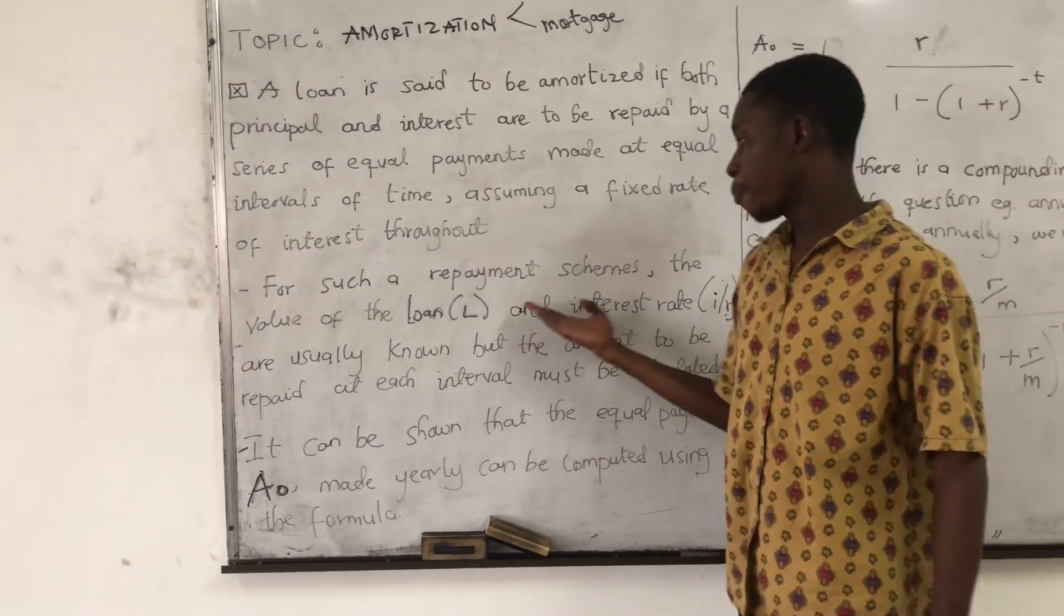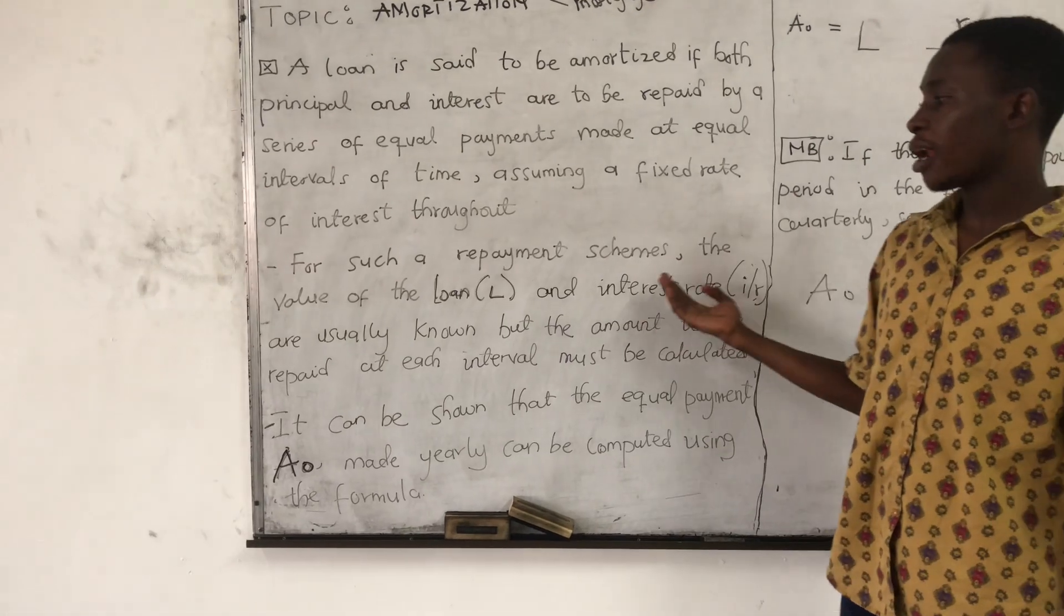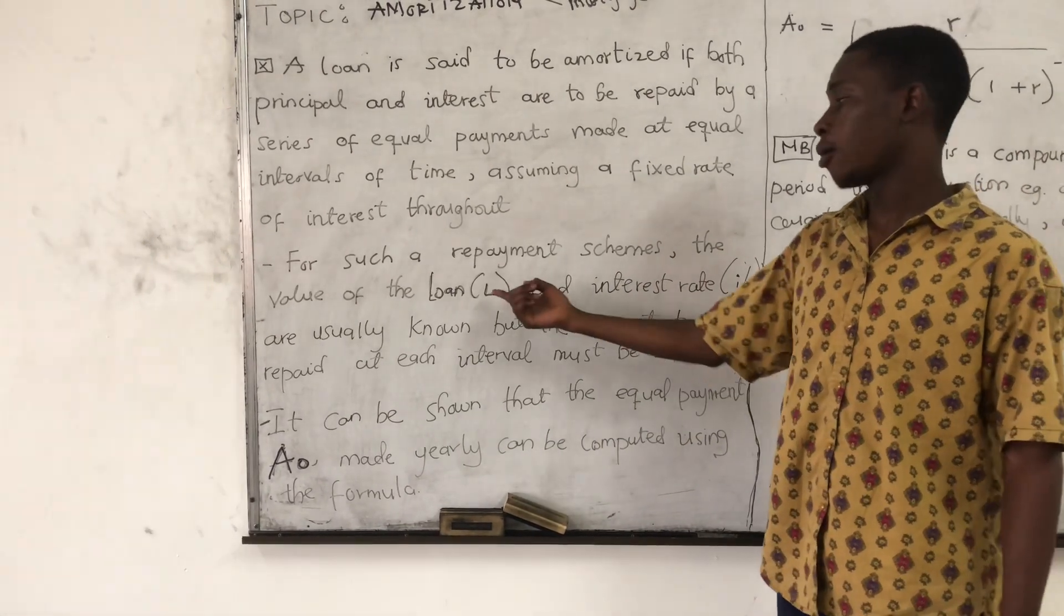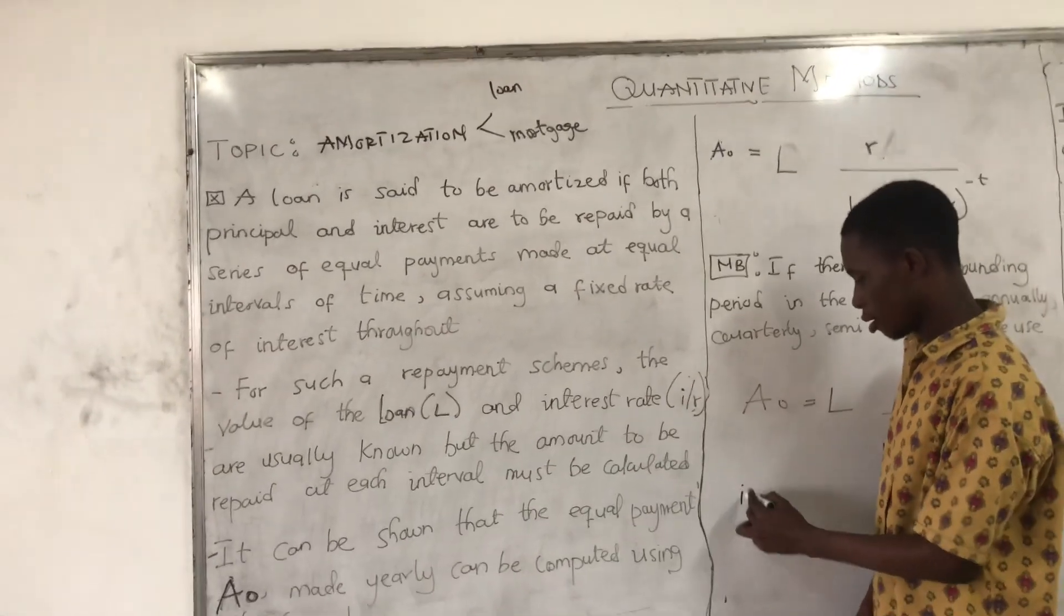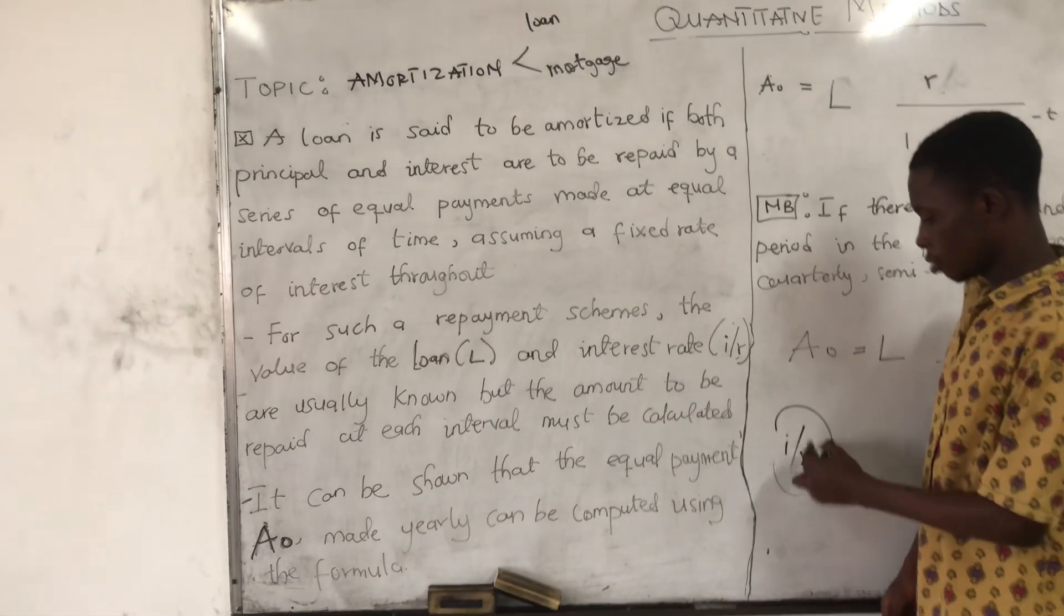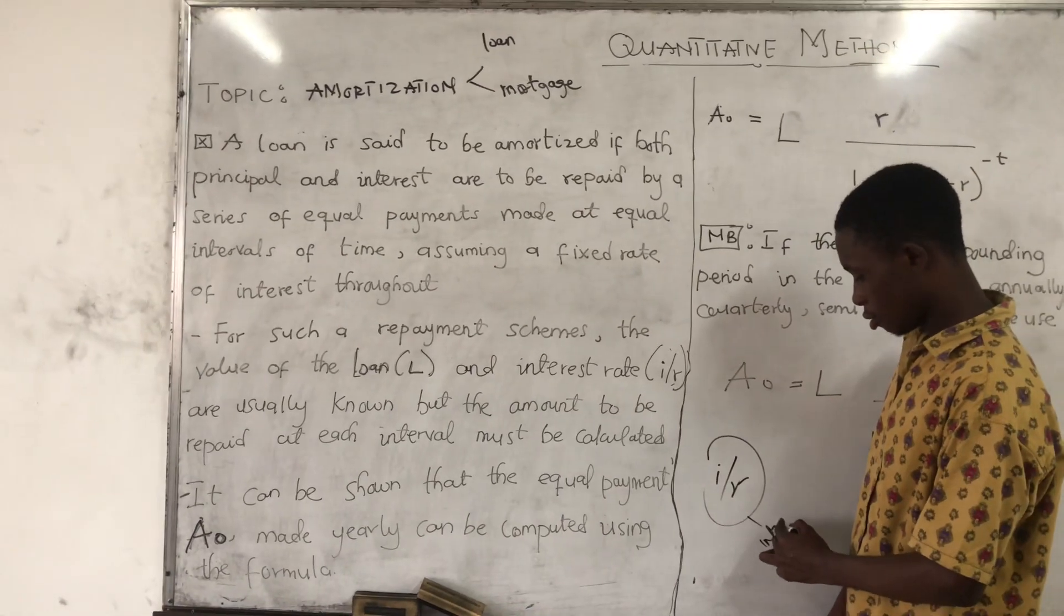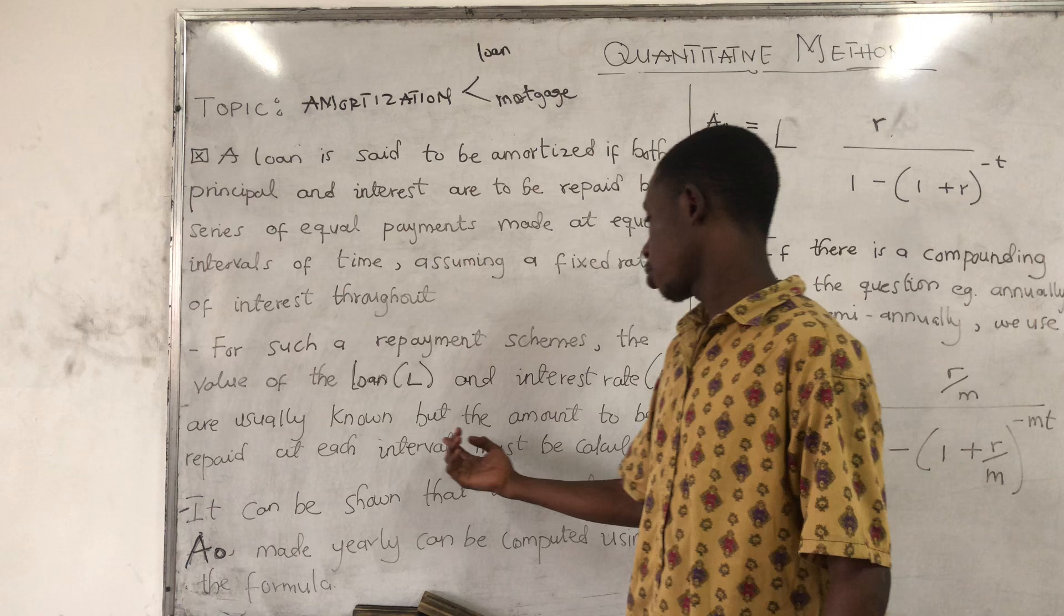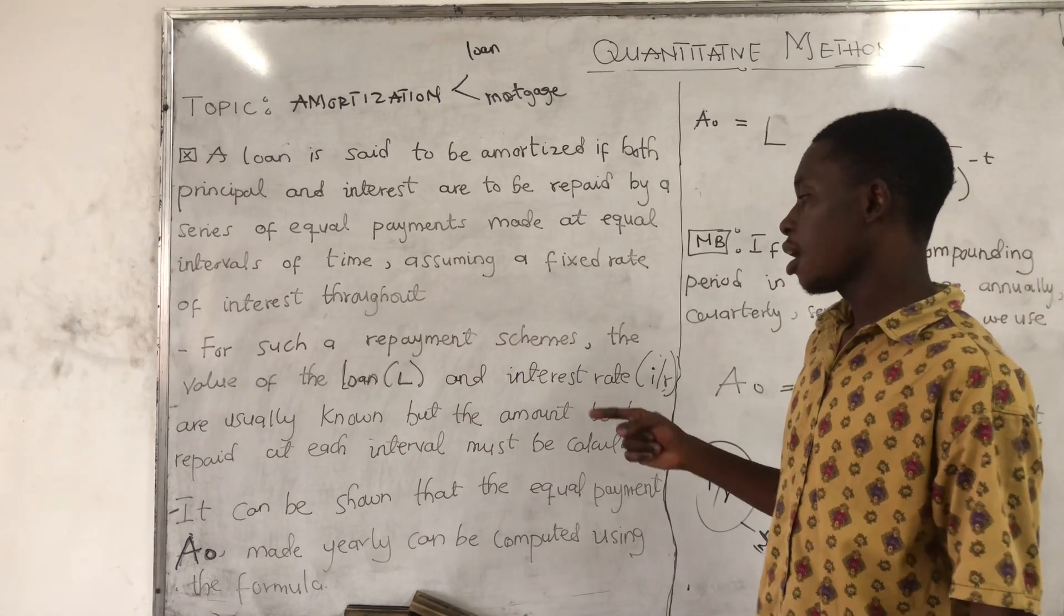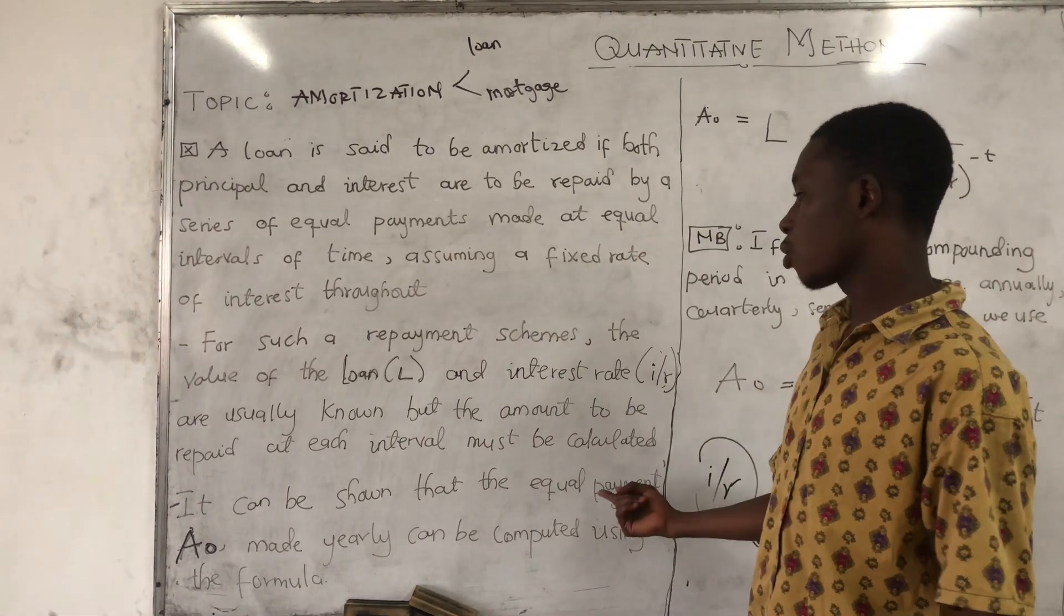For such a repayment scheme, the value of the loan, which is denoted by letter L, and the interest rate, which is denoted by either an I or an R for interest, are usually known, but the amount to be repaid at equal intervals must be calculated.